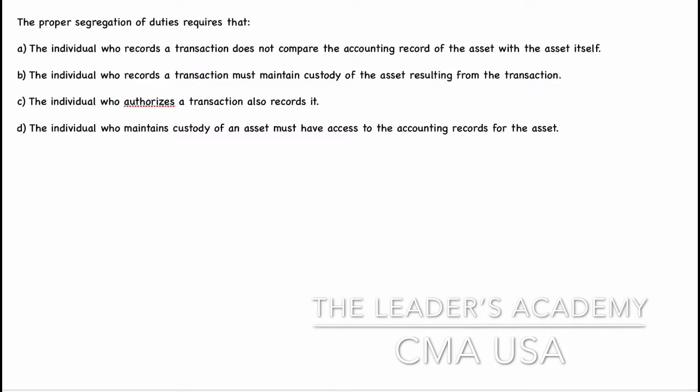The proper segregation of duties requires that: Option A, the individual who records a transaction does not compare the accounting record of the asset with the asset itself. Option B, the individual who records a transaction must maintain custody of the asset resulting from the transaction. Option C, the individual who authorizes a transaction also records it. Option D, the individual who maintains custody of an asset must have access to the accounting records for the asset.